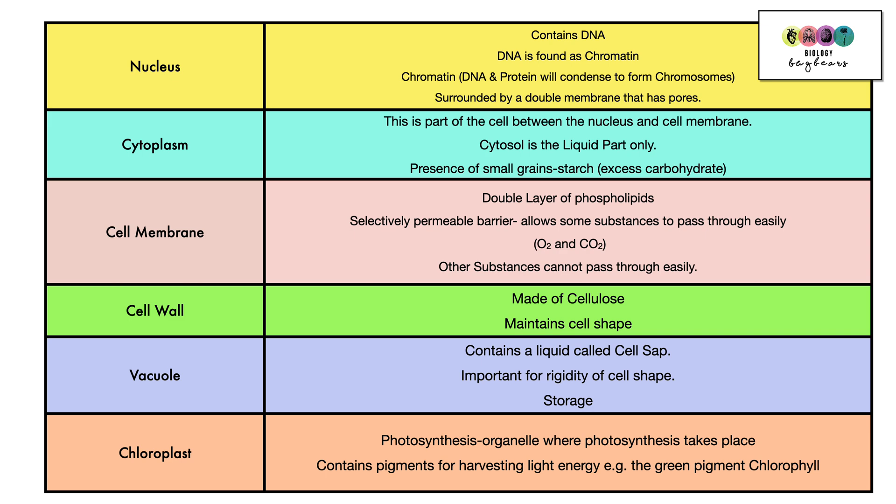There's also a large vacuole and that contains a liquid called cell sap. It has salts and sugars and water and other materials in it. It's important for rigidity of cell shape so it's important to give the cell its shape and it's also used for storage. Then we have the chloroplast. This is the organelle where photosynthesis takes place and it contains pigments for harvesting light energy, the most important being the green pigment chlorophyll.